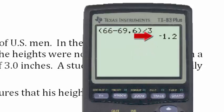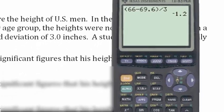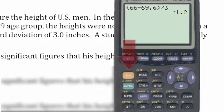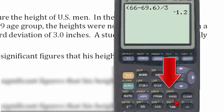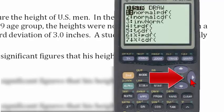We get a z-score of negative 1.2. To graph the solution on the TI calculator, we will use the shade normal function, which is found by clicking on the yellow second key, then the distribution button, then go to the draw menu, and hit enter to select shade normal.